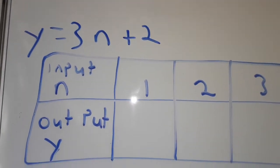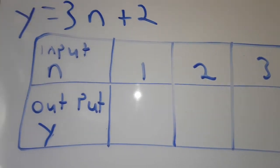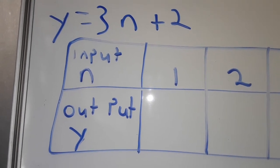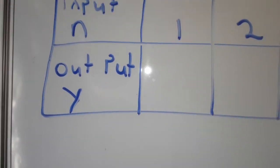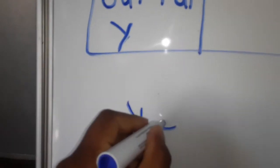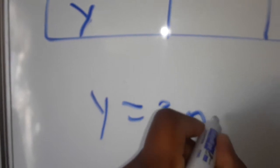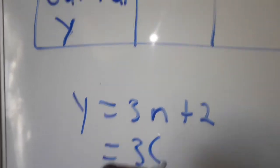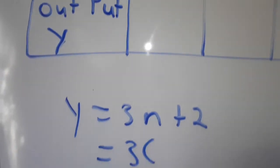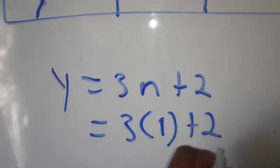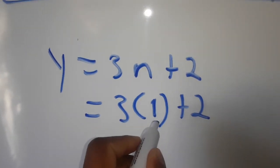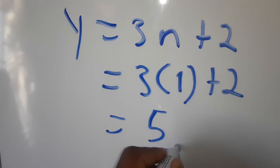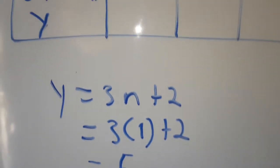So in this case, we want to find values. When we put 1, we want to find the output. So we'll say y is equal to 3n plus 2, which is going to be equal to 3 — in place of n, because n is the input, we'll put 1. So 3 times 1 is 3, plus 2, we should get 5. So 5 is our first answer.